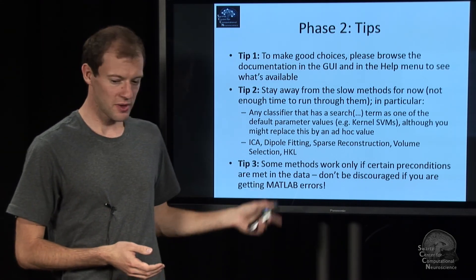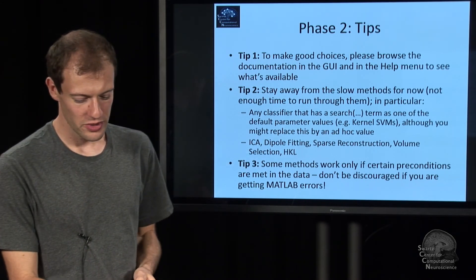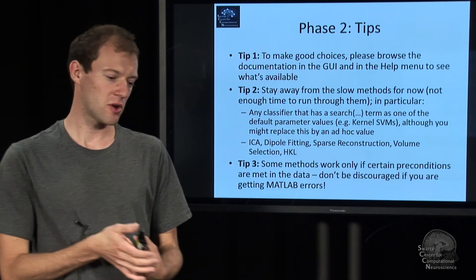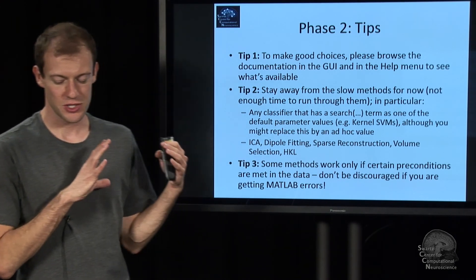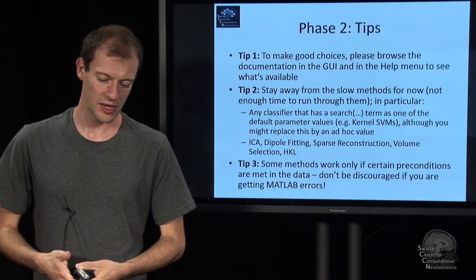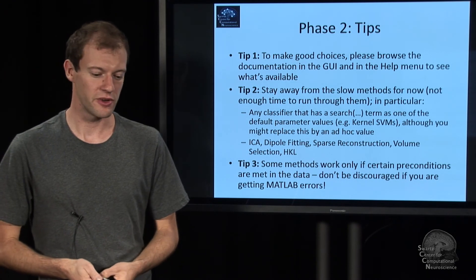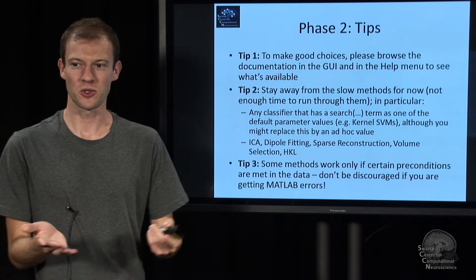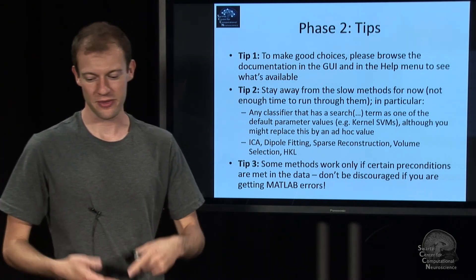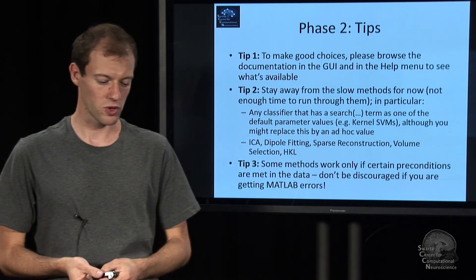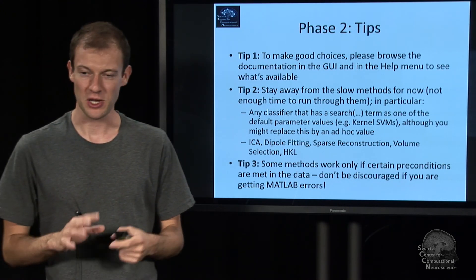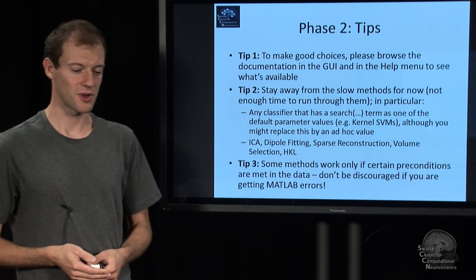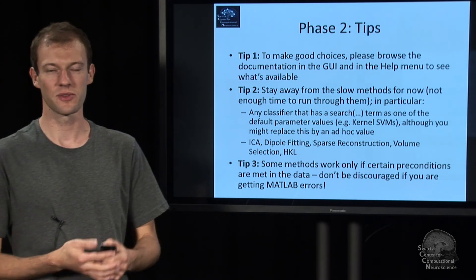One more thing: many of these methods work under some conditions but not others. These are machine learning tools — they were not necessarily created for EEG in the first place. So if something doesn't work and you get errors, don't be discouraged. Just go for other methods or try to figure out why something doesn't work. There are lots of combinations of things you can put together, and so consequently there's lots of room for errors and things like that.